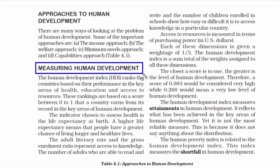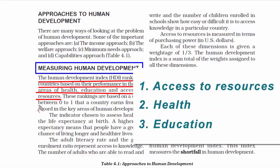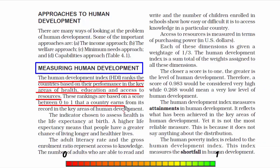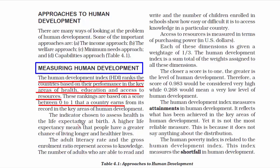We will now read about measuring human development. There is something called the Human Development Index, or HDI, that ranks countries based on their performance in the key areas of health, education, and access to resources. These rankings are based on a score between 0 to 1 that a country earns from its record in the key areas. A score of 0.983 would be considered very high, while 0.268 would mean a very low level of human development. The HDI is a sum total of the weights assigned to all these dimensions.